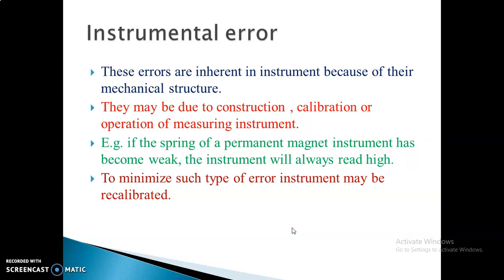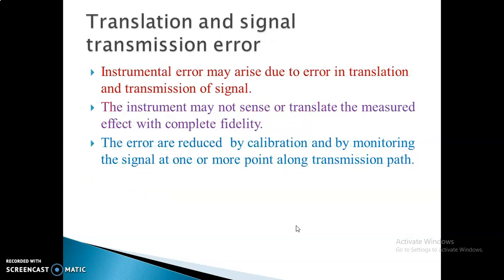The next type is instrumental error, which is purely based on the structure of the instrument. It is due to construction, calibration, or the operation of the measuring instrument. For example, in a PMMC instrument — a permanent magnet moving coil instrument — a spring is connected to the pointer which moves over the scale. If the spring is weak, the pointer will not show the correct reading. That is one way instrumental error occurs. To minimize this type of error, you have to recalibrate the instrument.